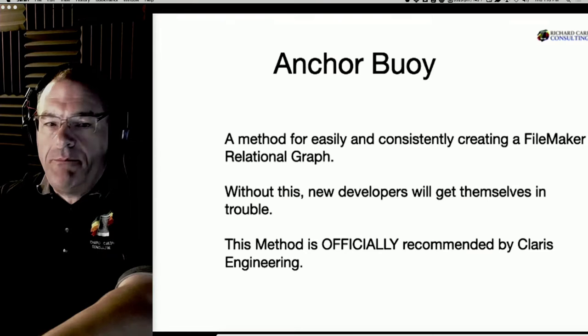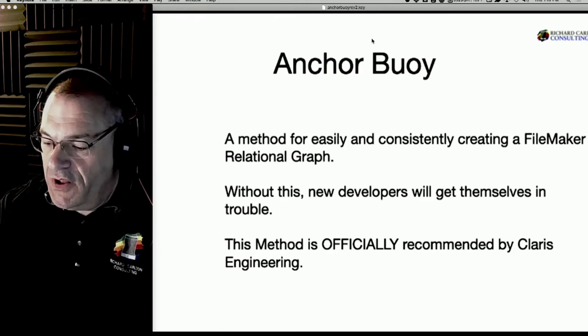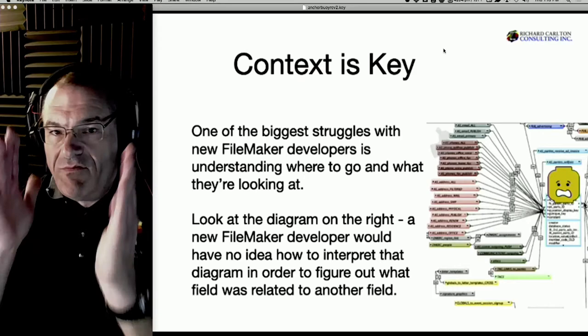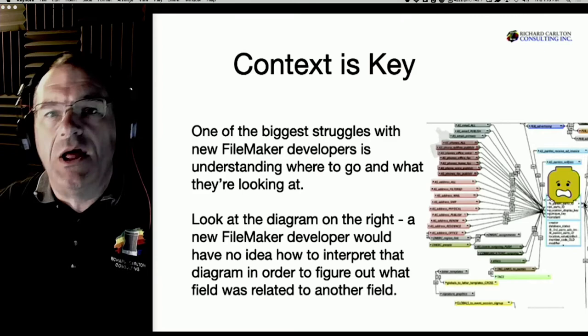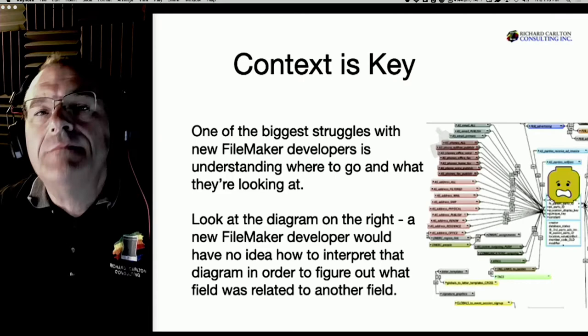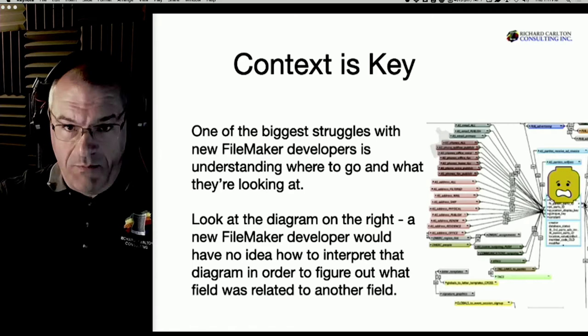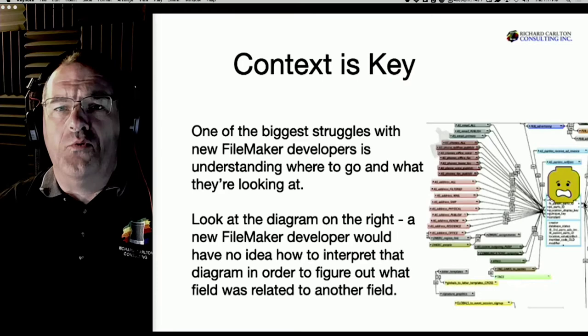It's about context. In FileMaker, when you have a layout, that layout is attached to a table occurrence on the graph. All these little boxes are table occurrences - they're not the table. What is a table occurrence? It's a representative of a table - basically like the table's attorney. If you have a contacts table, you can have as many attorneys as you want to hire.